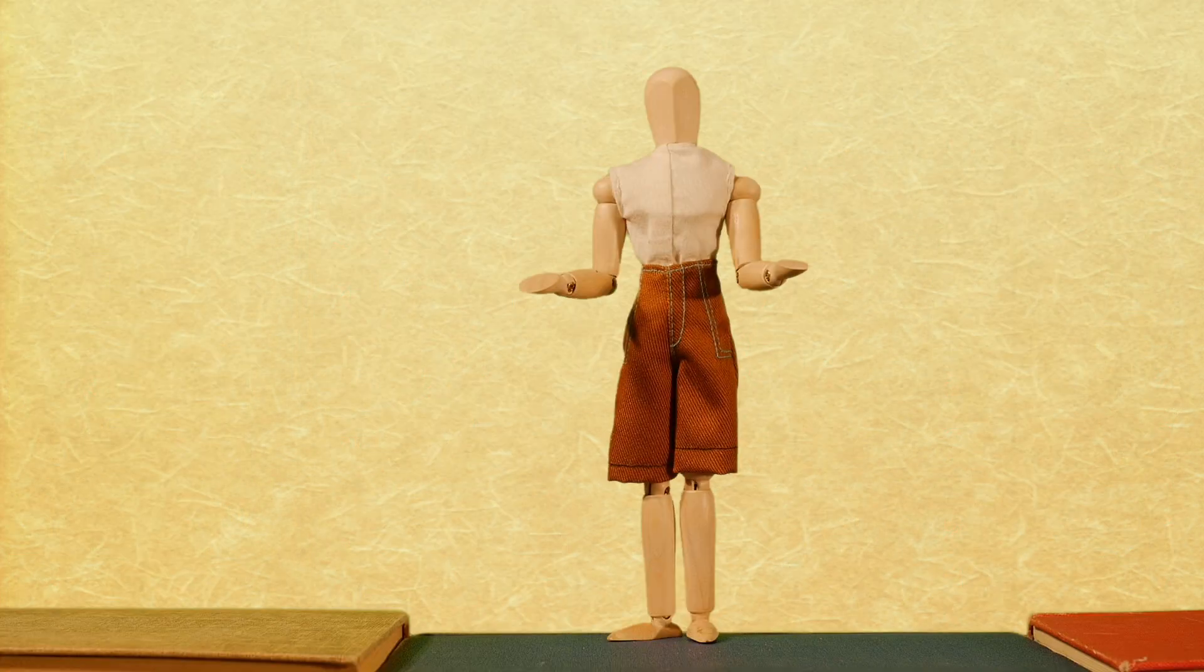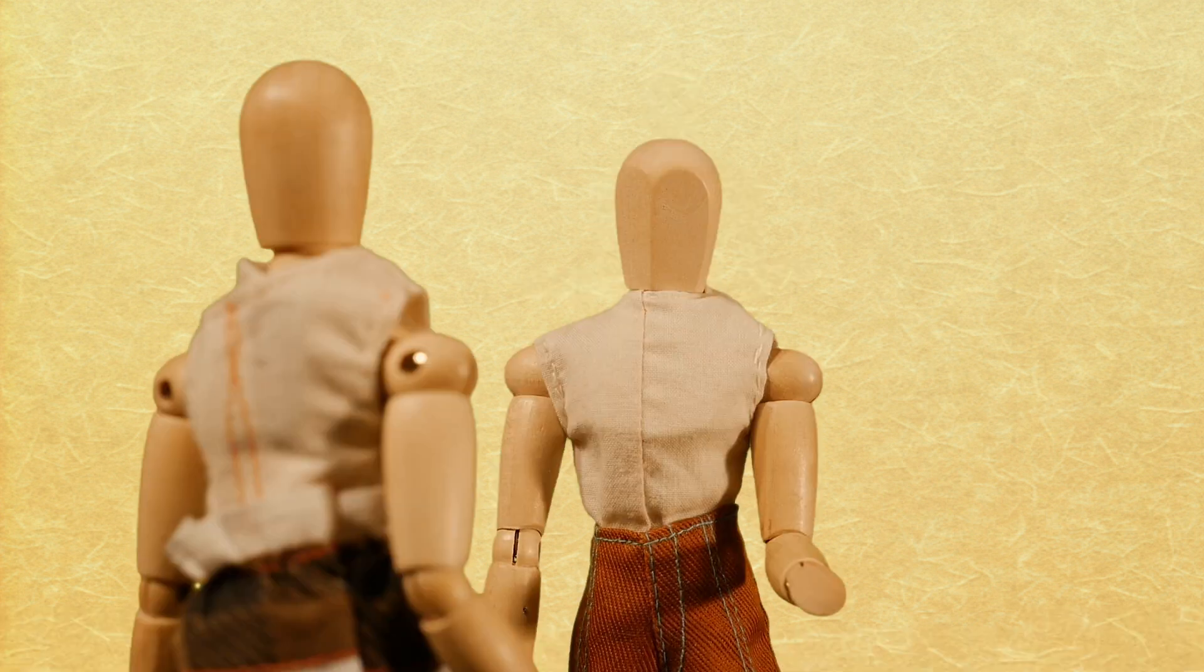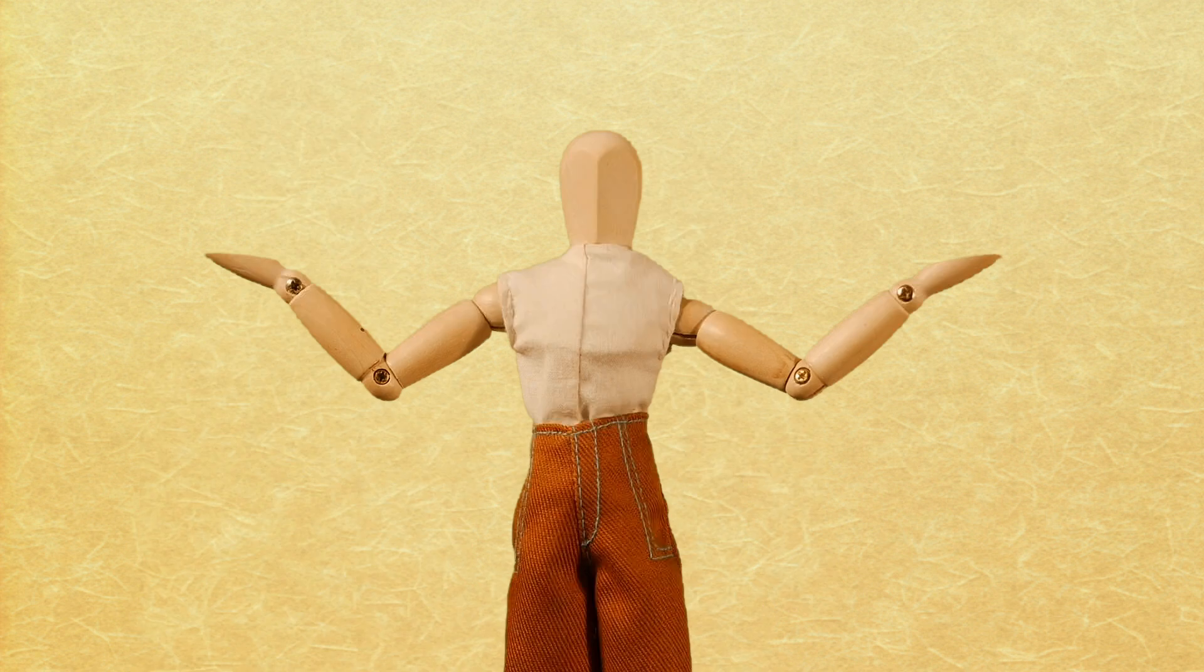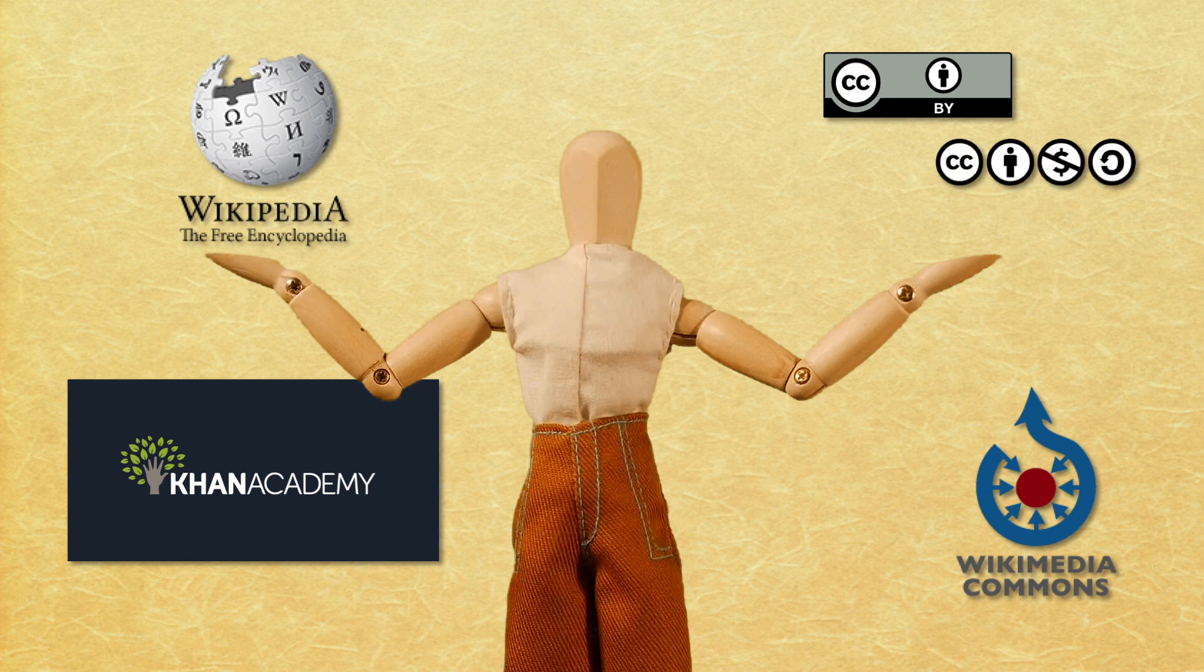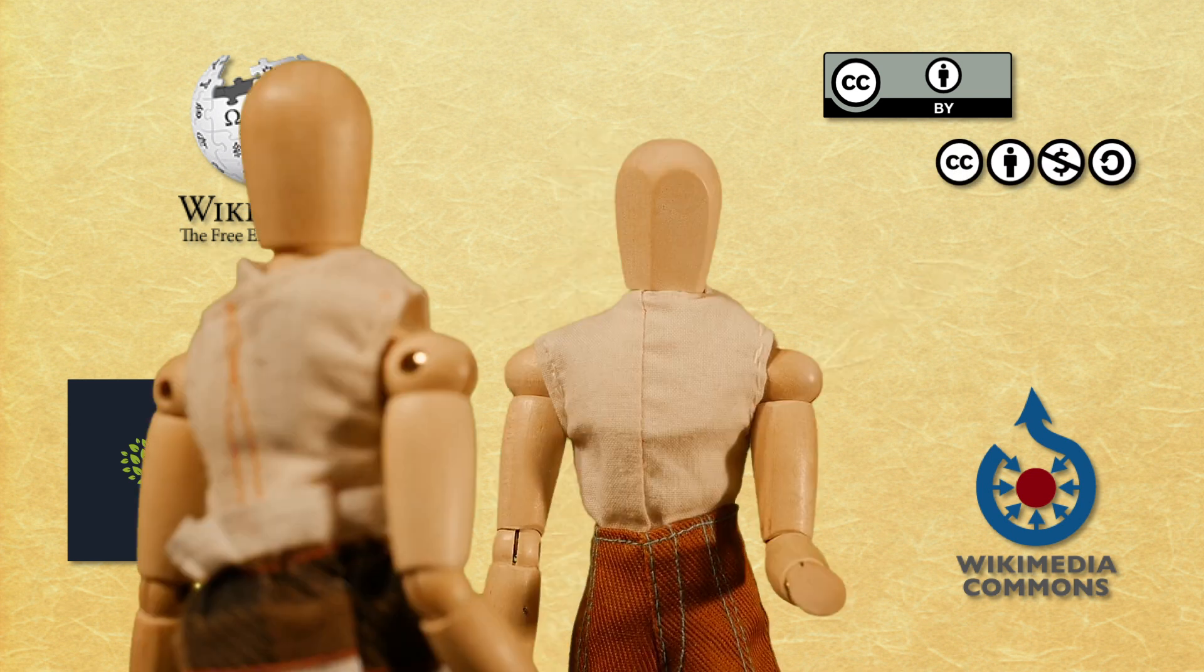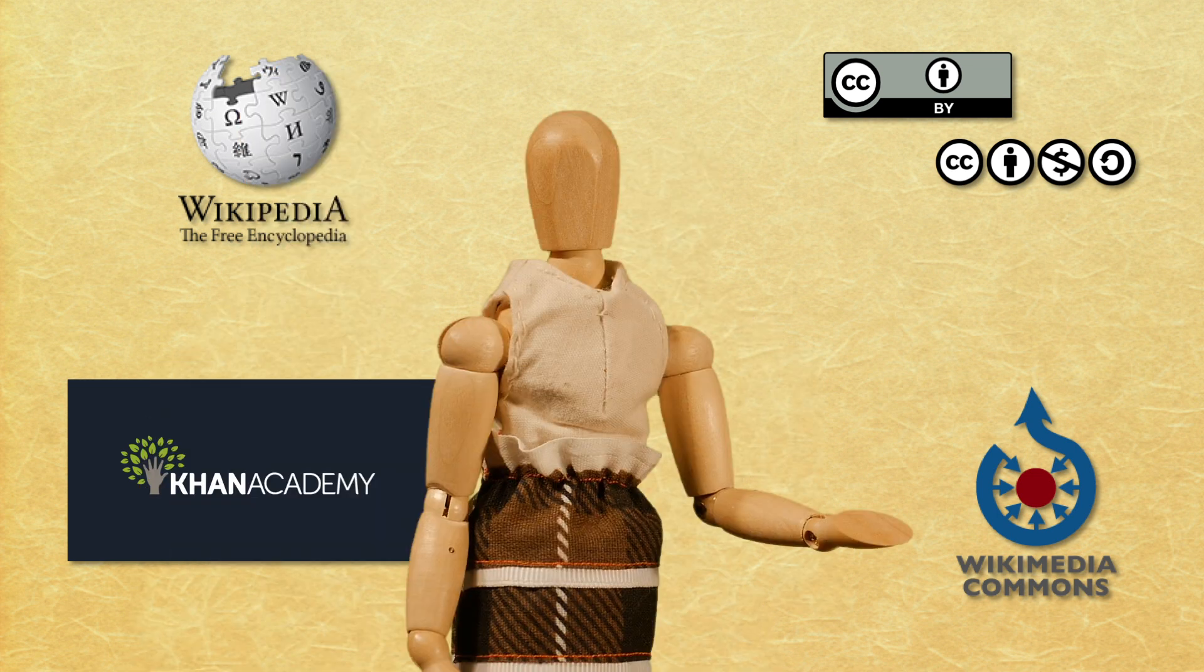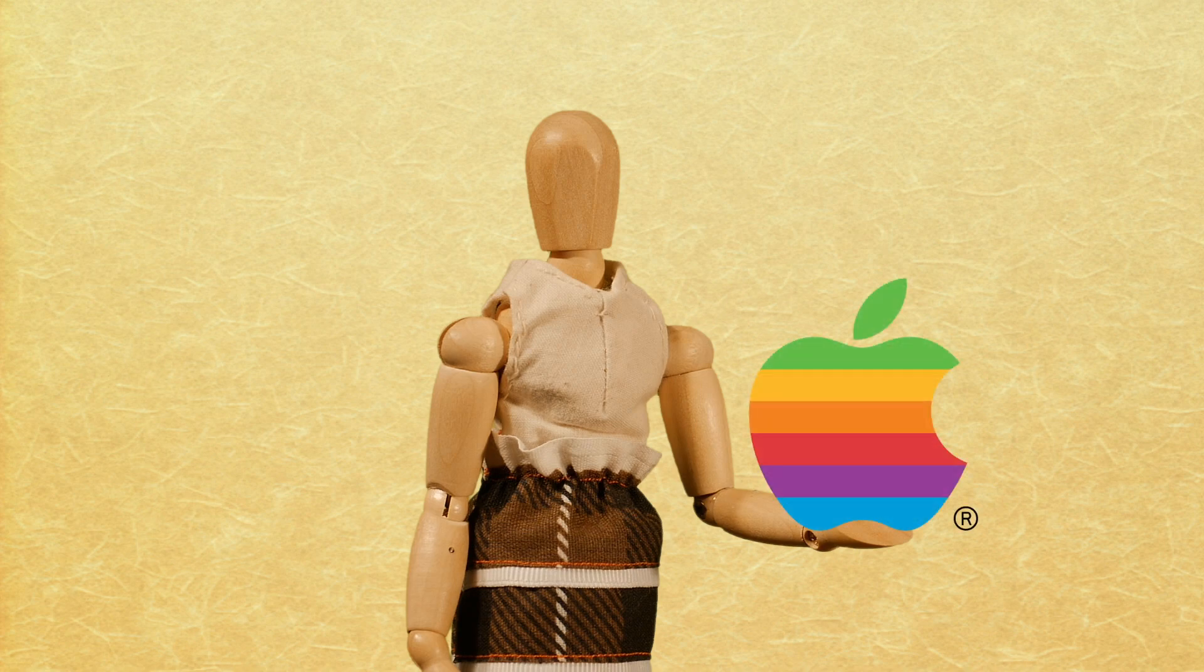But what about the internet, where all sorts of knowledge are there for everyone, and put out there for other people to learn from and use, you know, for free? You know, like Wikipedia, Wikimedia Commons, Khan Academy, and Creative Commons, that encourage the sharing and use of information for the betterment of the planet. Are people changing their minds about who owns words and ideas? Yes, people are. And that brings us to the period in which we live right now, the post-modern period.